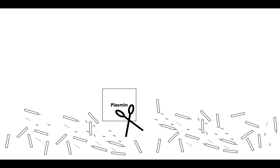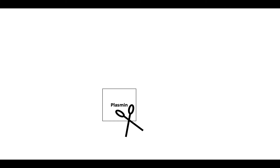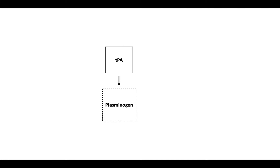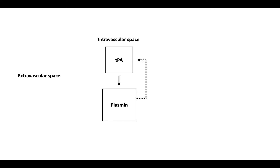Let's take a minute to discuss how we come to get plasmin. Plasmin exists as a proenzyme known as plasminogen. Plasminogen is acted upon by tissue-type plasminogen activator, which converts it to plasmin. Plasmin acts in a positive feedback loop to keep itself activated. Tissue-type plasminogen activator activates plasmin in the intravascular space, while in the extravascular space, the activator of plasmin is known as urokinase.